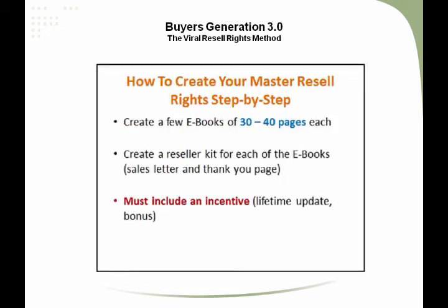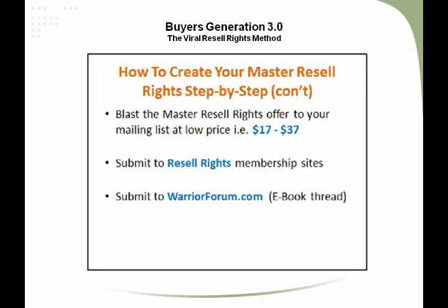So how exactly do you create a Master Resell Rights product? The first step is to create a few eBooks of 30 to 40 pages each. The next step is to create a reseller kit for each of the eBooks — it must include the sales letter and a thank you page. The most important element is to include an incentive in each of the eBooks, such as a lifetime update to the book or an unannounced bonus. Next, blast the Master Resell Rights offer to your mailing list, but make sure it is priced rather low — for example, $17 to $37.